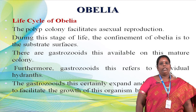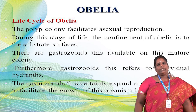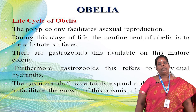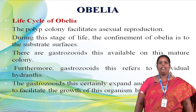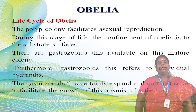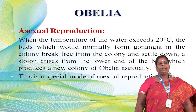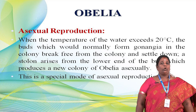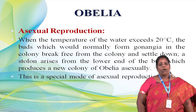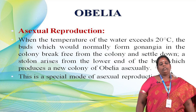The life cycle of Obelia is very special — its elaborate polyp colony facilitates both sexual and asexual reproduction. The coenosarc zooids in the mature colony expand and contract, facilitating growth and feeding. For asexual reproduction, when the water temperature does not exceed 20°C, buds form. The colony breaks free and settles down. Stolons arise from the lower side of the buds and produce a new colony by budding — this is asexual reproduction in Obelia.